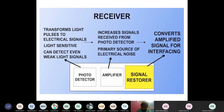The signal restorer restores whatever information was communicated at the initial stage. After passing through the photo detector and amplifier, the signal regains its original form. For example, if you communicated 'hello' as an audible signal, it goes to the transmitter, is converted to optical pulses, travels through the fiber satisfying total internal reflection, reaches the receiver, and is converted back to the audible word 'hello.'